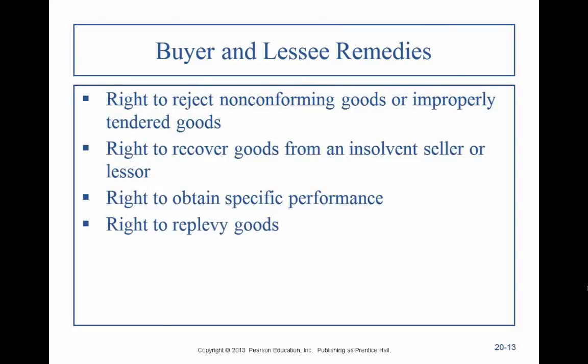What can a buyer do — or a lessee — if they're not going to get the goods promised by a seller? The first right is to reject non-conforming goods. We've already talked about this: if you got something that wasn't what you contracted for or wasn't properly delivered, you have the right to reject it and sue for breach of contract. You also have the right to recover goods from a seller that has gone bankrupt or insolvent, though that requires going through the legal process. The right to obtain specific performance — who remembers what that means?